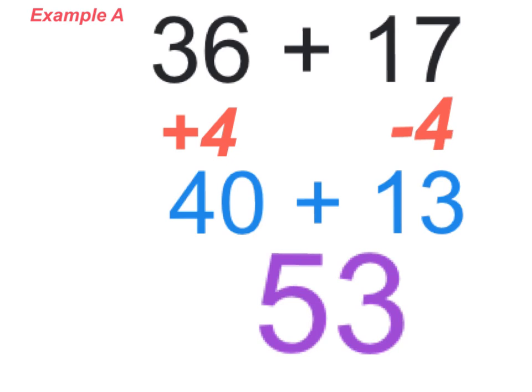I took 4 away from 17, the second value, to make that 13. But if I take away from that second value, I have to add it back to the first value. And I did. And the reason why I added it to that first value is because 36 plus 4 now made 40.